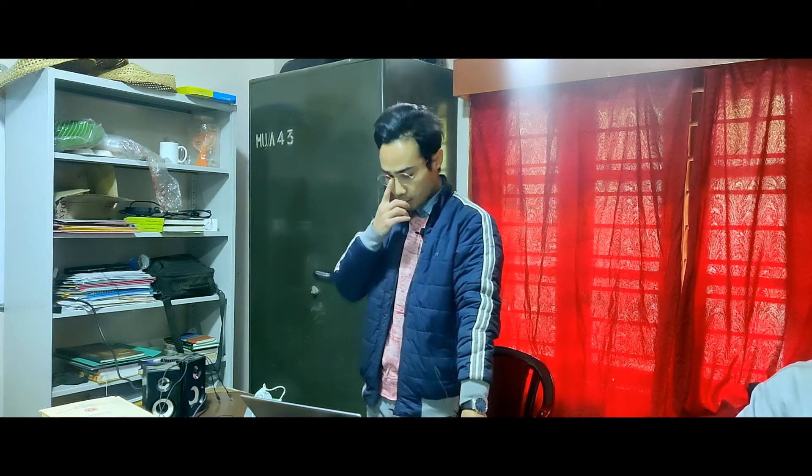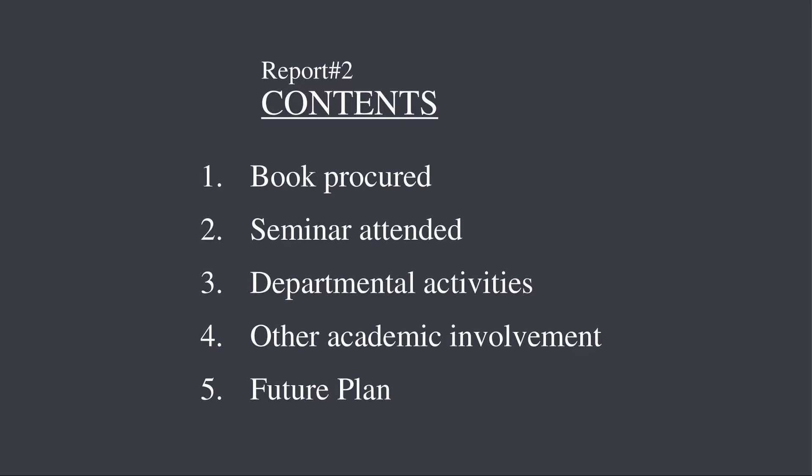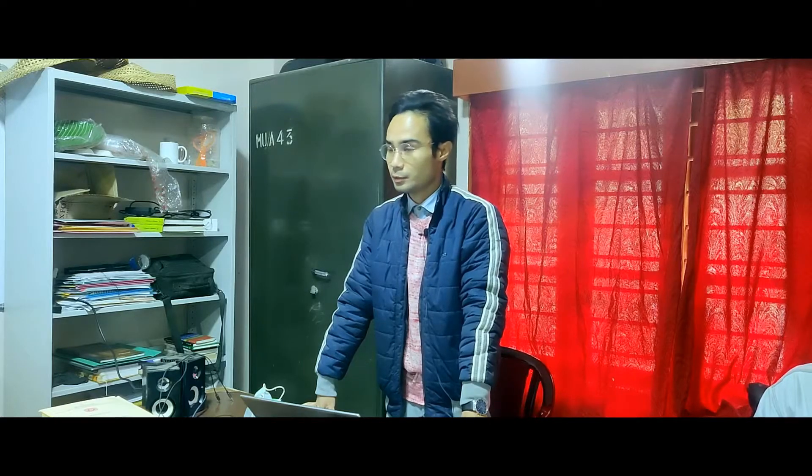Let me highlight the content of my second progress report. The first section covers books I have procured, the second covers seminars or webinars I attended during that time period, the third covers departmental activities I was involved in, the fourth covers other academic involvements, and the last section is my future plan for the next three months starting from the last week of January.